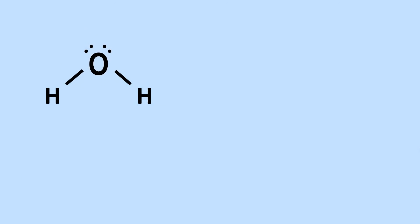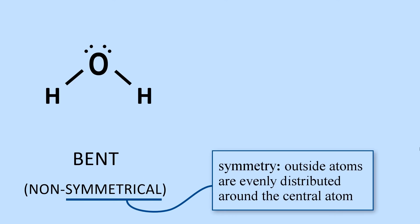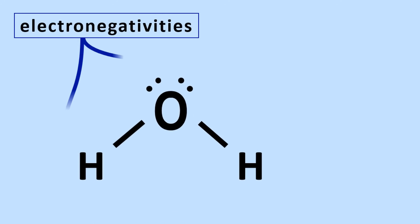Let's take a close look at water and see why it is a polar molecule. First of all, it is bent, meaning it does not have a symmetrical shape. We will define symmetrical as having all outside atoms evenly distributed around the central atom. The central atom here is oxygen, and both hydrogens are on one side of the oxygen, which makes it non-symmetrical — the hydrogens are not evenly distributed around the oxygen.